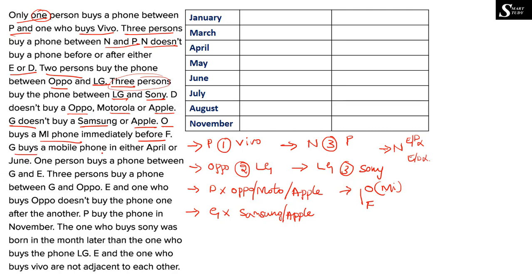G buys a mobile phone in either April or June — so G can be in April or June, giving two possibilities. We know G doesn't buy Samsung or Apple. Next clue: only one person buys a phone between G and E — there must be a gap of exactly one person between G and E. This forms further possibilities in each case of G's position, so we keep this on hold as well.